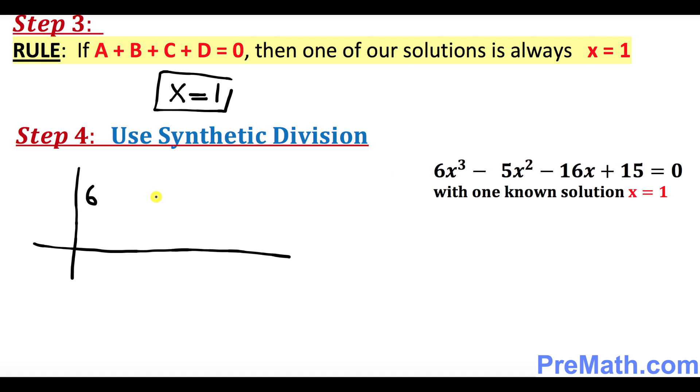I'm 6, negative 5, negative 16, and 15. And as you know, one of the solutions at x equal to 1 is going to come right up here at this place. So let's go ahead, this 6 is going to be as it is, 6 right up here.